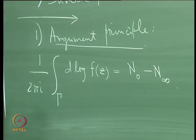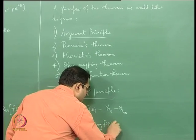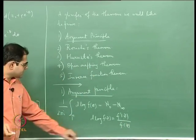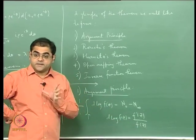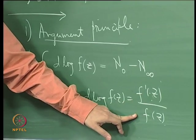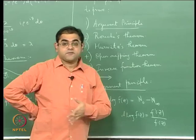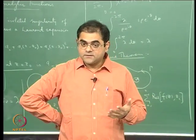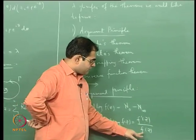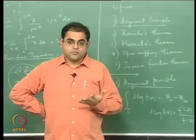This is basically the argument principle. d(log f(z)) means f'(z)/f(z). Since f is analytic, f' is also analytic — a function that is analytic is infinitely differentiable. The quotient of analytic functions is analytic; the only problem is the denominator might vanish. Wherever f has a zero, the logarithmic derivative f'/f will have a pole; if f has a pole, f' also has a pole.